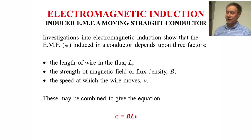Induced EMF in a moving straight conductor. Investigations and experiments show that the EMF induced in the conductor depends upon three factors: the length of the wire in the flux L, the strength of the magnetic field or flux density B, and the speed at which the wire moves V. And we can combine these to give E equals BLV as shown there.